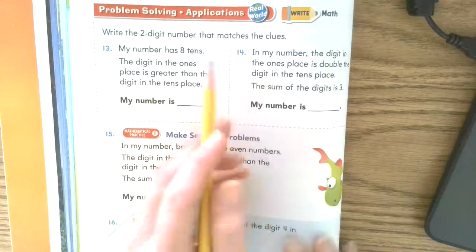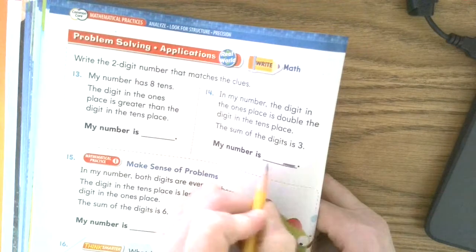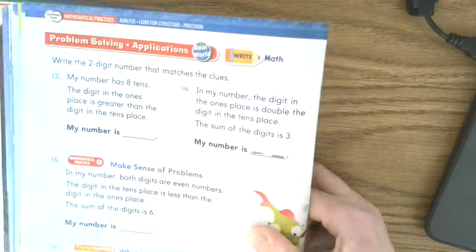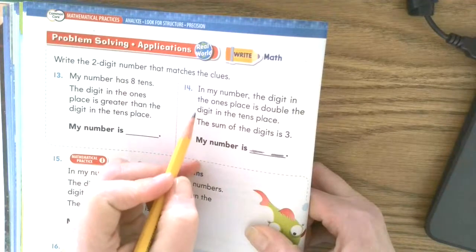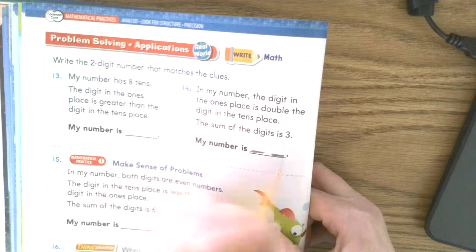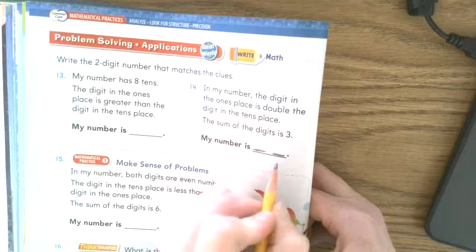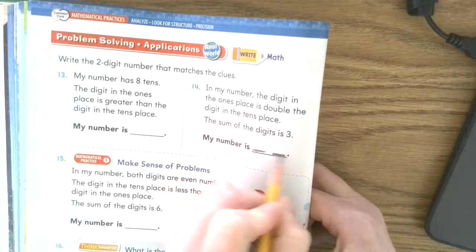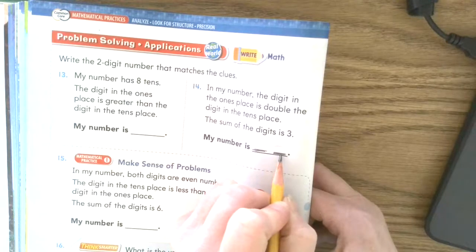So the digit in the ones place. So go like this and do a spot for ones and a spot for tens. The digit in the ones place is double. So this is going to be double the digit. So this is going to be a larger digit. We are not talking about value.